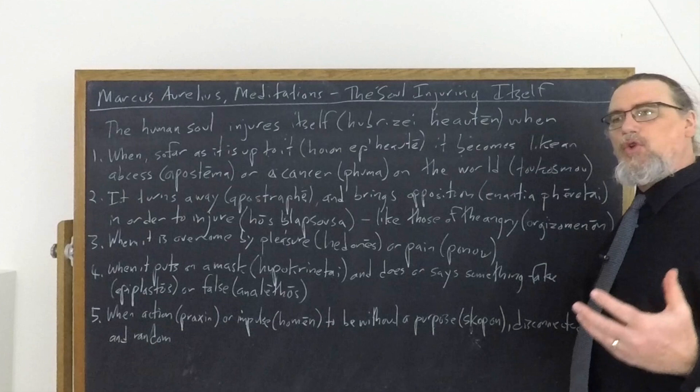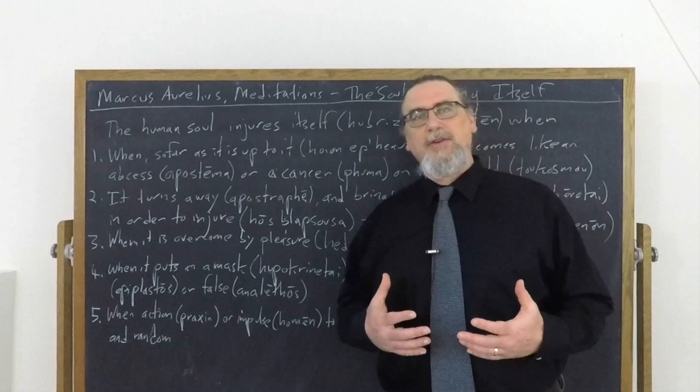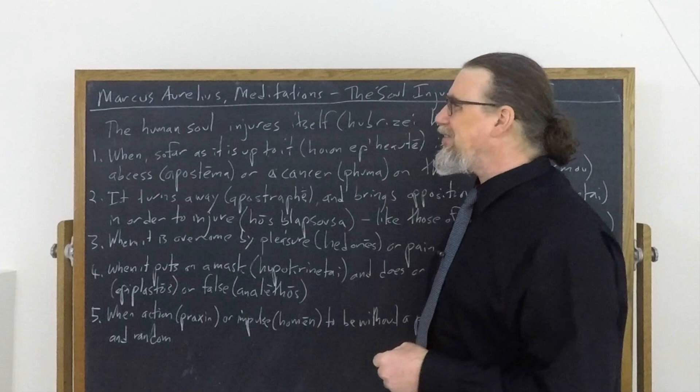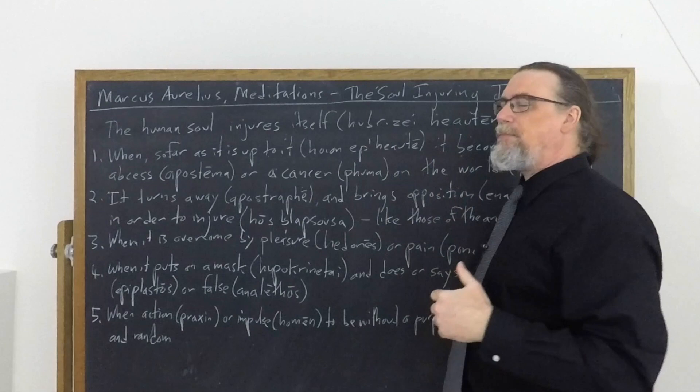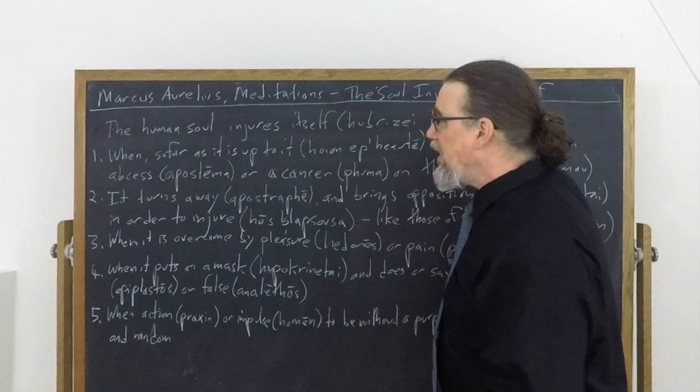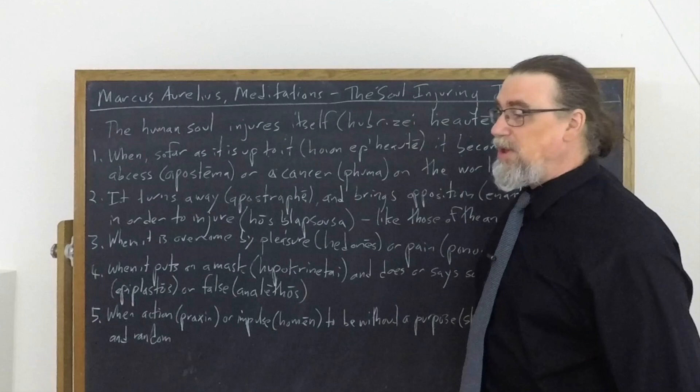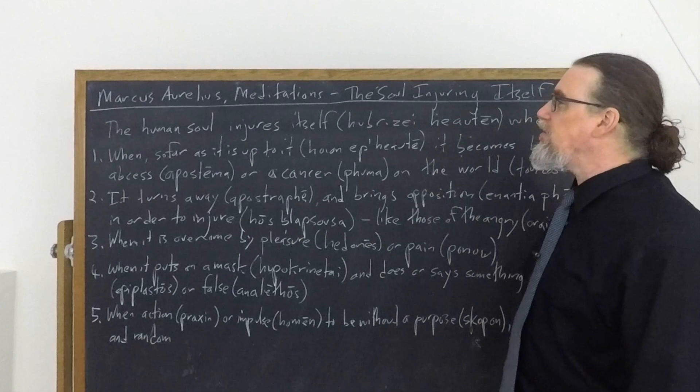So the first one, which he talks about at a little bit more length than the others, is translated here as when it does its best. The Greek is actually hoion ep heaute. And for anybody who's read Stoic philosophy, particularly Epictetus, this ep heaute is really quite striking because that's the realm of what is up to us. It's part of what's often called the dichotomy of control, which we know Marcus is quite familiar with because he's read Epictetus and mentions him. So when it's up to the soul or insofar as it's up to the soul, what does the soul do that's problematic?